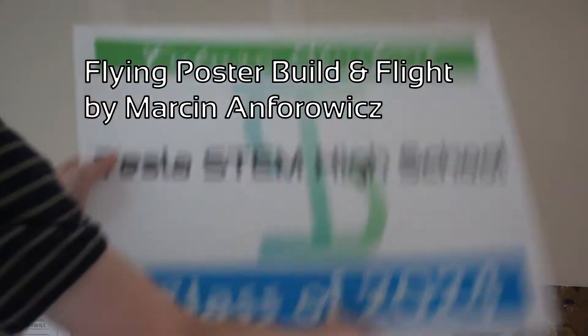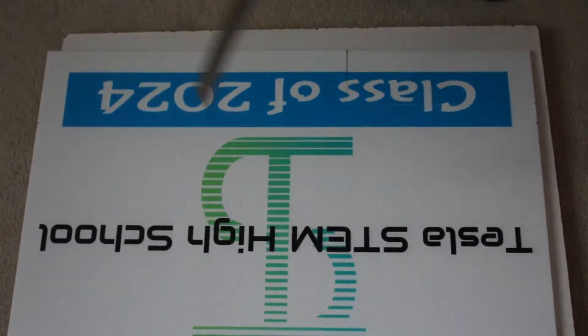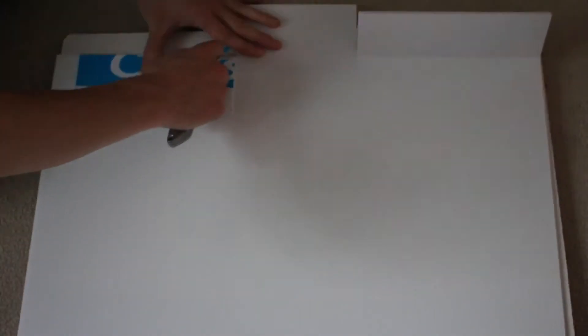I started by taking the Tesla stamp poster off my wall. Then, I halfway cut through the plastic to make hinges. I turned it over and cut slivers of plastic out so that the hinges would have full articulation, like so.